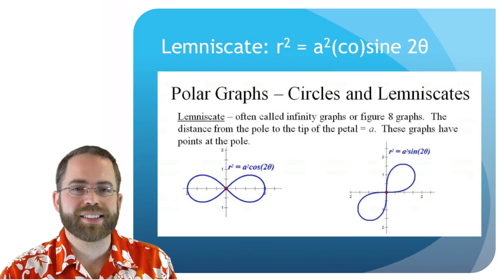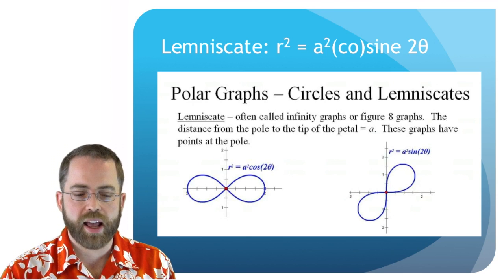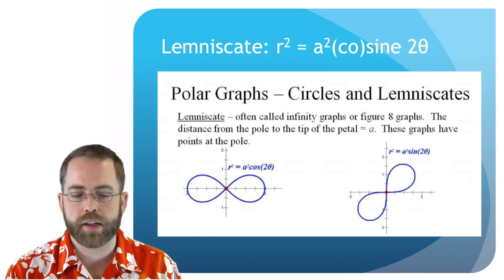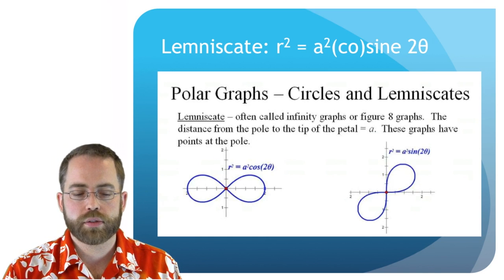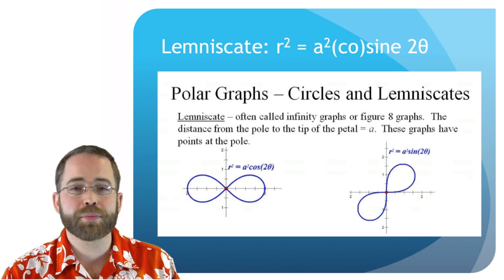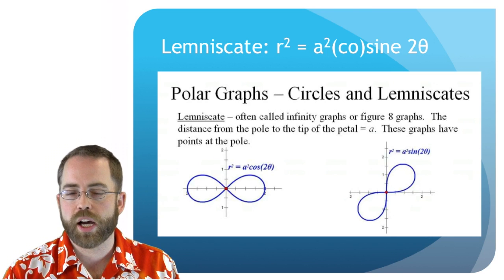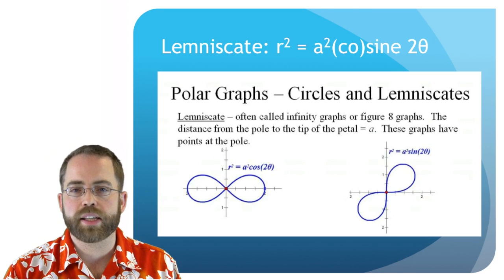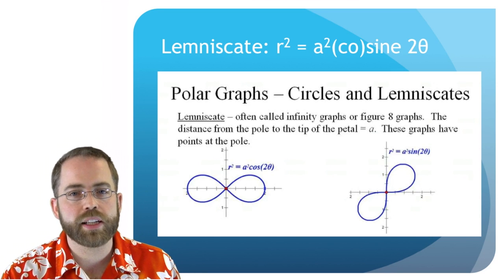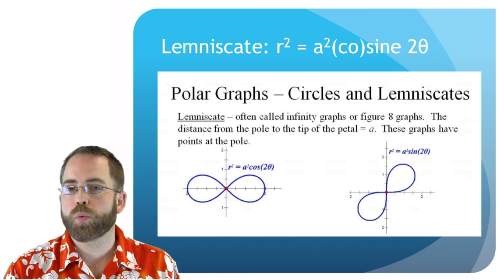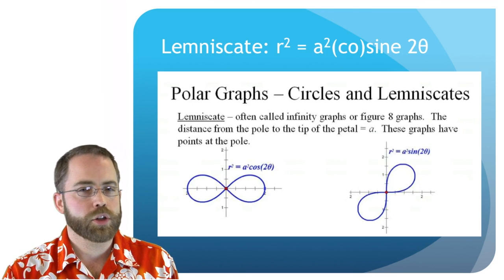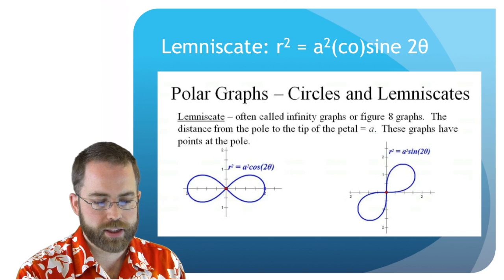And then there are lemniscates. So these are the infinity symbols. And again, they are a little bit difficult to put into your calculator, but they can be done. They have r squared equals some number squared times sine or cosine of two theta. And you're going to have to put square roots in your calculator. And then your calculator is going to freak out. And it's going to not get the shape to be exactly right because the square roots become tiny little numbers and it gets lost in the details. So watch out for that. If you see a gap in your calculator window graph, you might become suspicious. So that's a lemniscate.